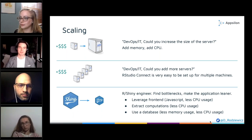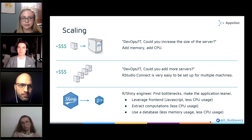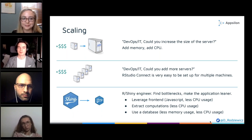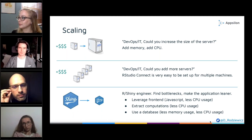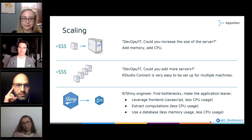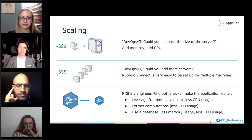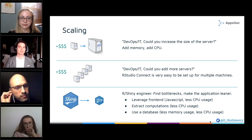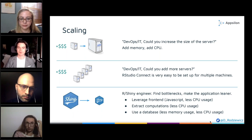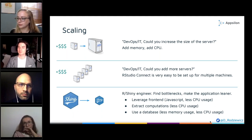The second step is to ask DevOps or IT to add more servers. This is as simple as spinning up additional virtual machines in the cloud, or a bit more complex with physical machines. The good news is RStudio Connect is super easy to configure — just simple steps, and all your machines will run RStudio Connect and your application. The third and most difficult option requires you to understand why the application may be slow, find the bottlenecks, and make the application leaner.